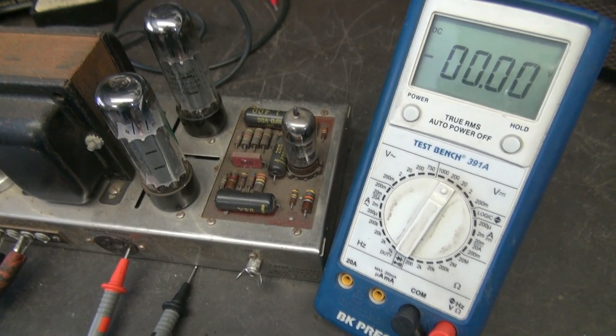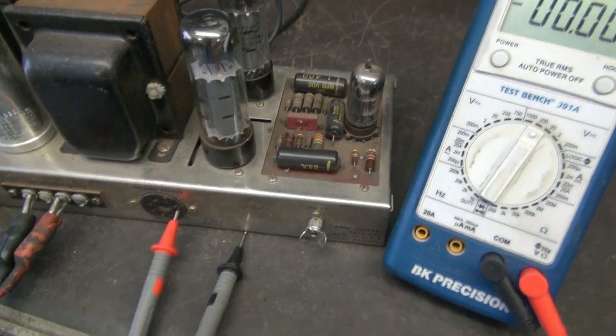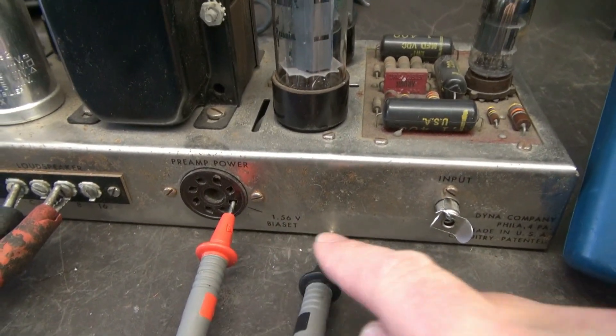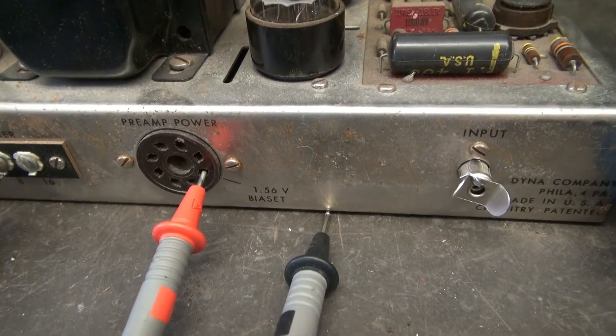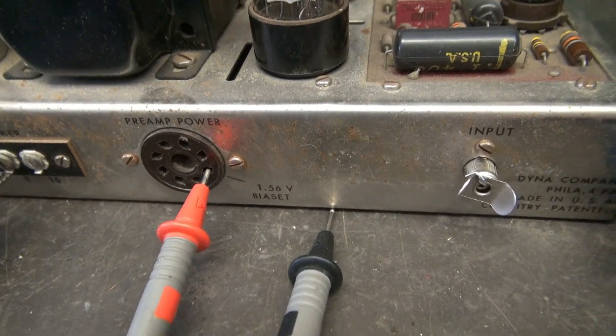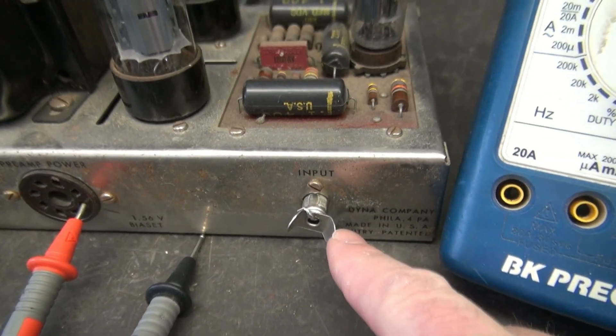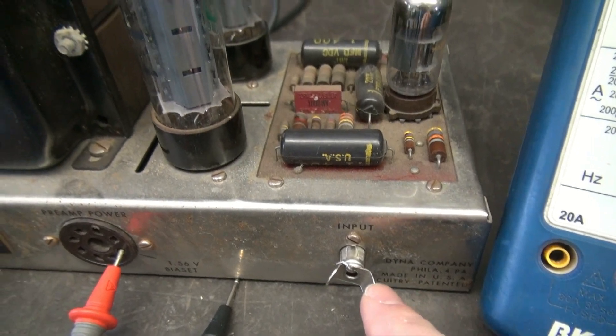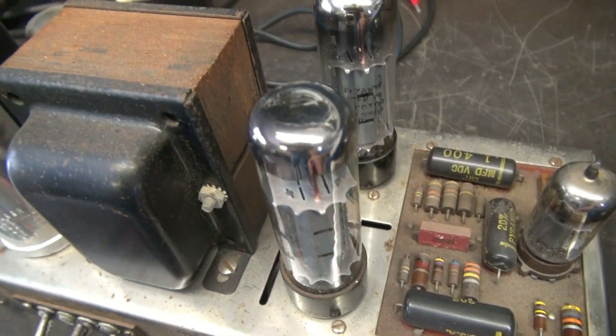Alright, it's time to take a look at that bias. So I got my meter set up into the convenient bias test point, which they're looking for approximately 1.56 volts. I have a shorting plug on the input to eliminate any chance of noise getting in here and messing with me.